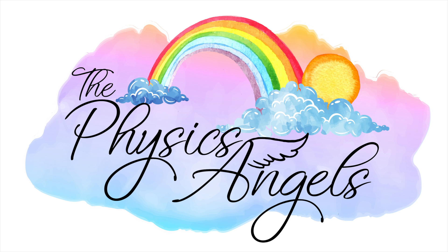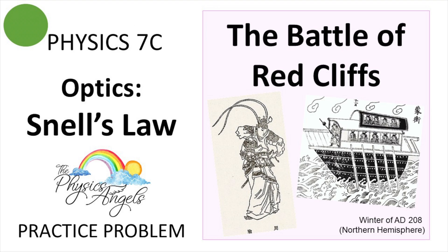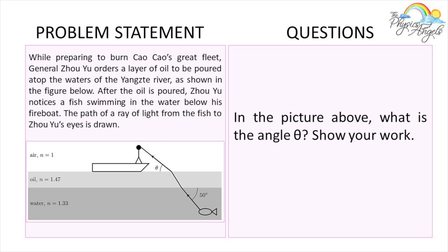Hello everybody, welcome back to our channel. In this episode we're going to be solving a Physics 7C practice problem on the topic of optics. As usual, if you're finding this content helpful please make sure to leave a like — it really helps our channel. The problem we're solving today involves Zhuge Liang ordering a layer of oil to be poured atop the waters of the Yangtze River. After the oil is poured, he notices a fish swimming in the water below, and the path of a ray of light from the fish to him is drawn.